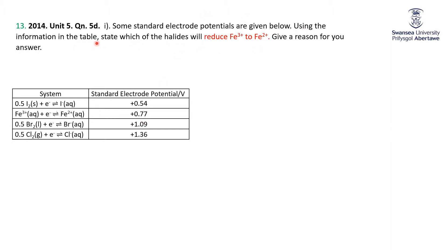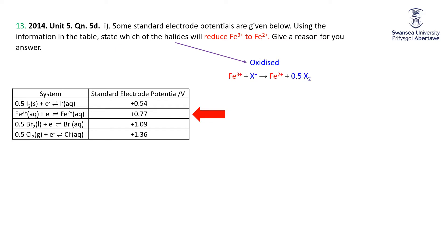Using the information in this table, we need to determine which of the halides will reduce Fe3+ to Fe2+. The reduction half equation we're interested in is Fe3+ being reduced to Fe2+, and we have to give a reason for our answer. If Fe3+ is being reduced, then something else must be oxidized — and we're told it's going to be a halide. So a halide X− must be oxidized to a halogen.